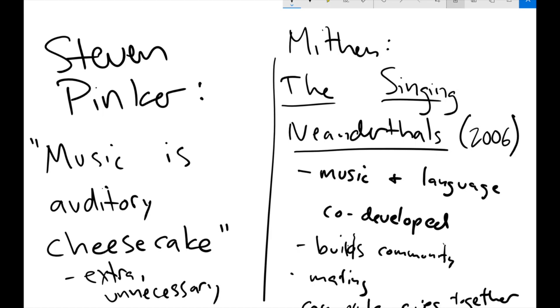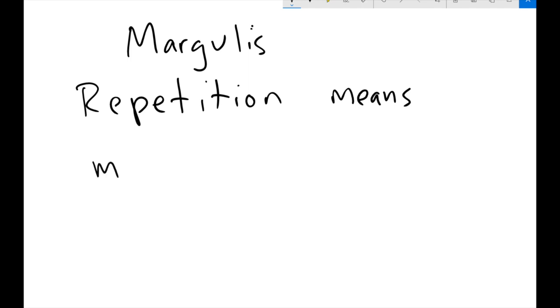Margulis, on the other hand, is going to argue that repetition is a very important way in which music does not equal language. Music is different than language. And I'll leave it to you to read that chapter and kind of get the different pieces of evidence that she cites.